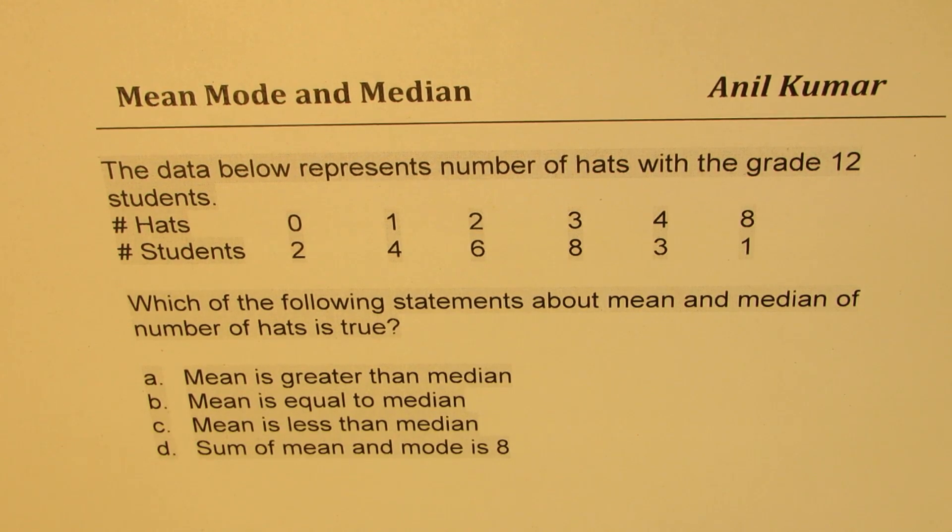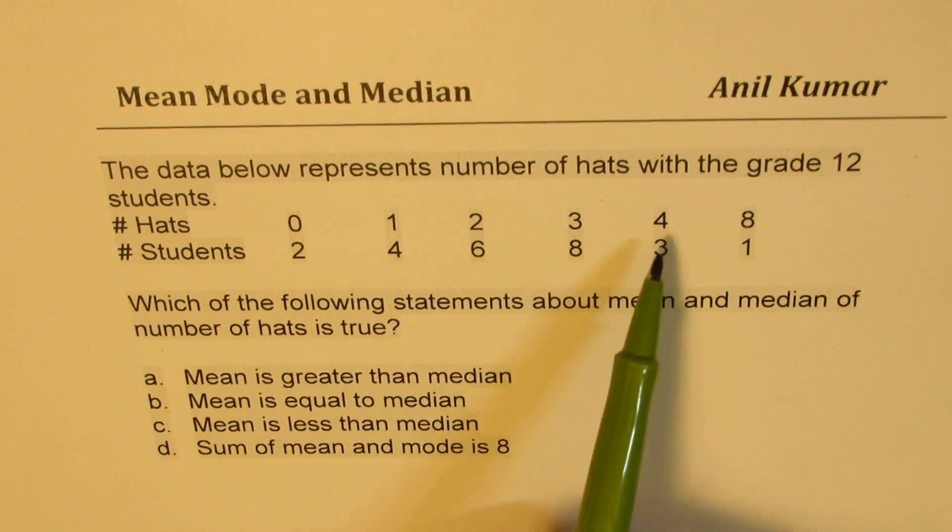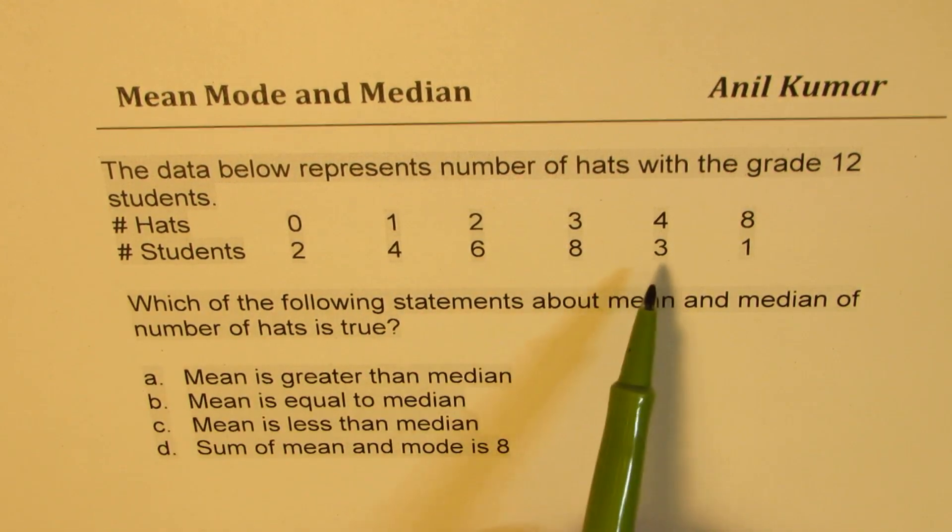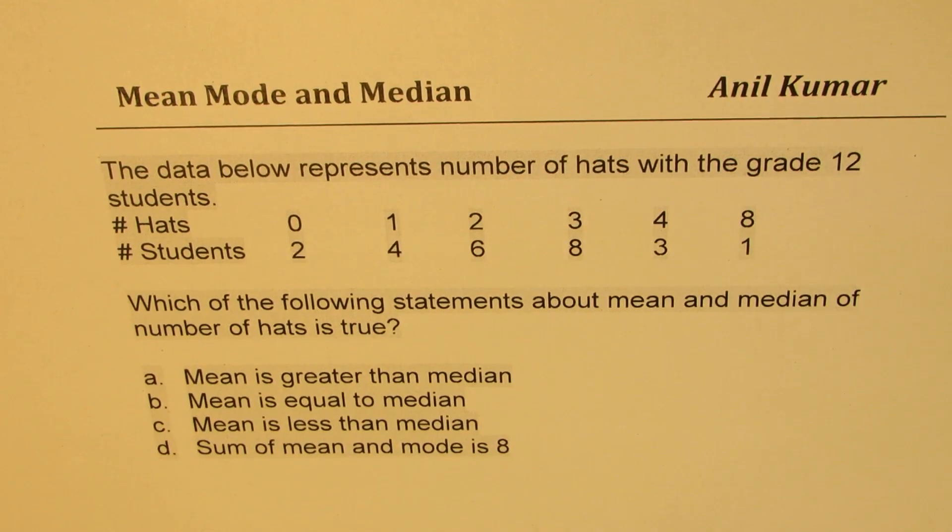The question here is: the data below represents number of hats with grade 12 students. Number of hats: 0, 1, 2, 3, 4, and 8. Number of students: 2, 4, 6, 8, 3, and 1. The question based on this data is, which of the following statements about mean and median of number of hats is true? Mean is greater than median. Mean is equal to median. Mean is less than median. Sum of mean and mode is 8.